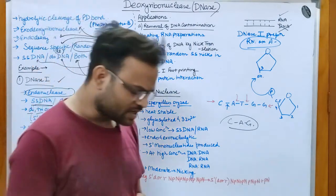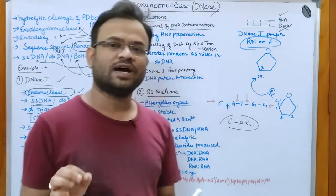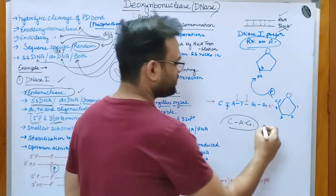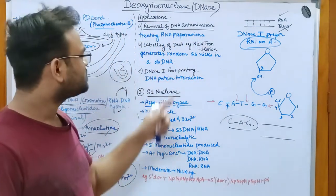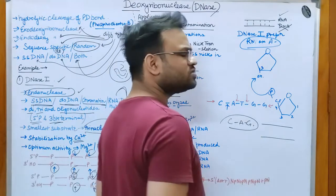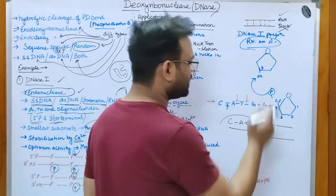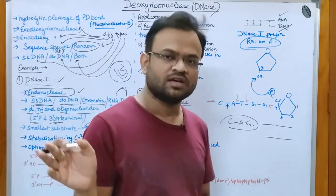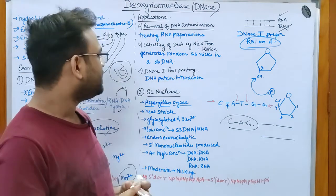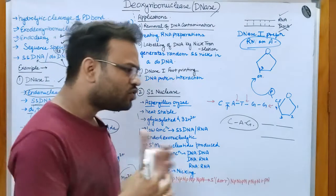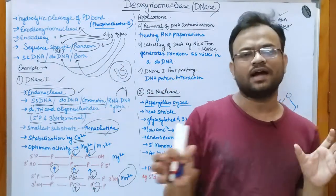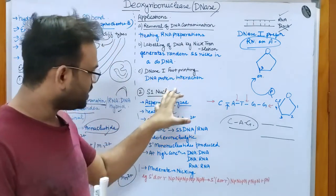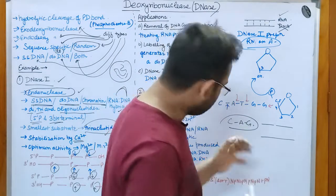Another application is labeling of DNA by nick translation. At very low concentrations, DNase I produces a nick — cutting at just one base — and then nick translation can proceed. DNase I is also used in DNA footprinting, where we determine whether a DNA and a protein are interacting with each other.